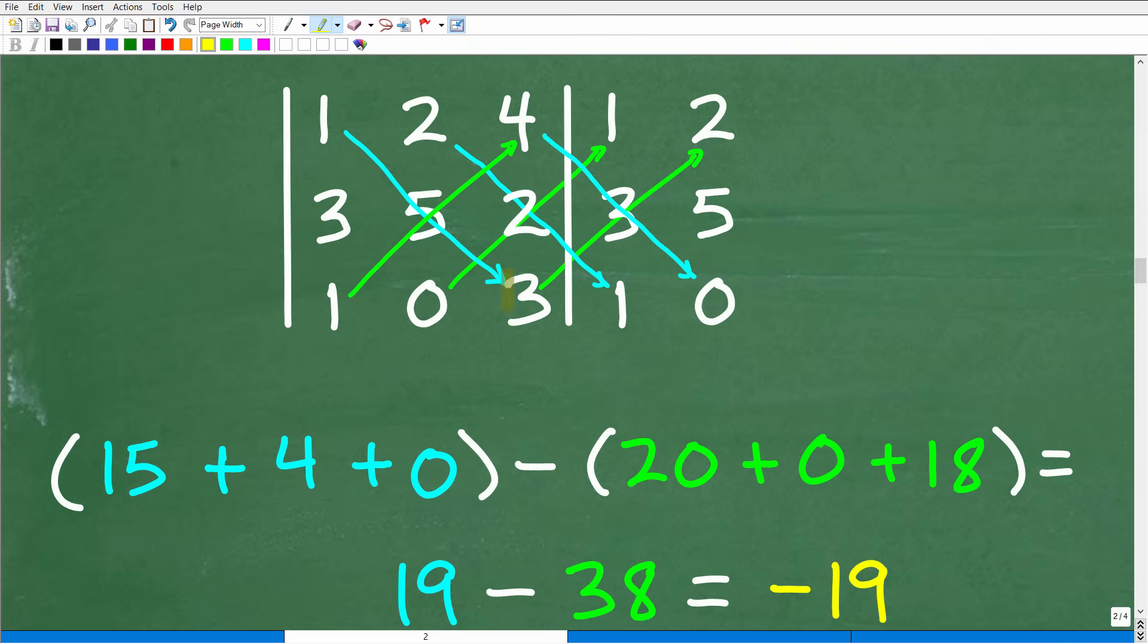Here is what we're going to do. You can see these blue lines, these diagonals. You're going to multiply - you're going to create products with each of these diagonals. So one, five, and three - one times five times three is 15. We're going to put that product right there.